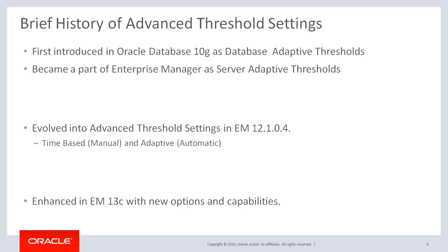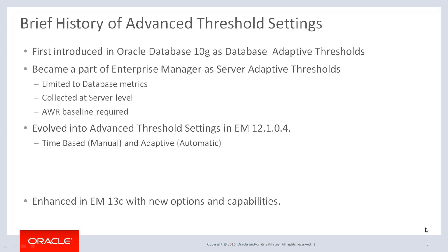Let me provide a brief history of advanced threshold settings. This feature was originally the database adaptive thresholds, first introduced in Oracle Database 10G, and later became part of Enterprise Manager. However, its capability was fairly limited — it only worked against selected database metrics, and sampling was done at the database server level, not at the agent level. So the only supported target type was the database, and it also required users to prepare AWR baselines prior to configuring thresholds.